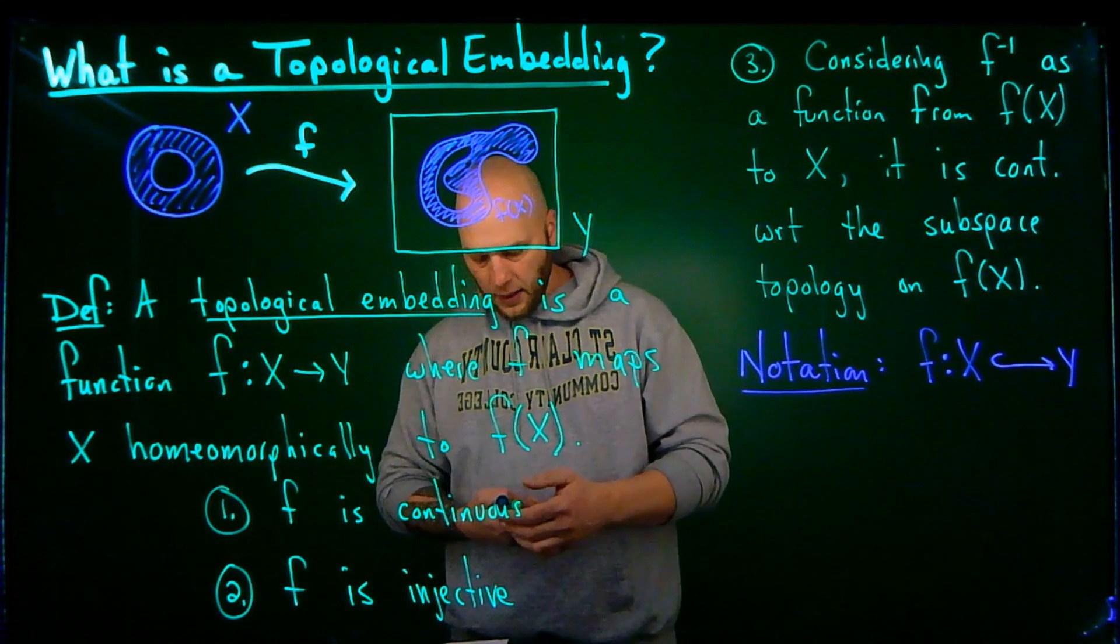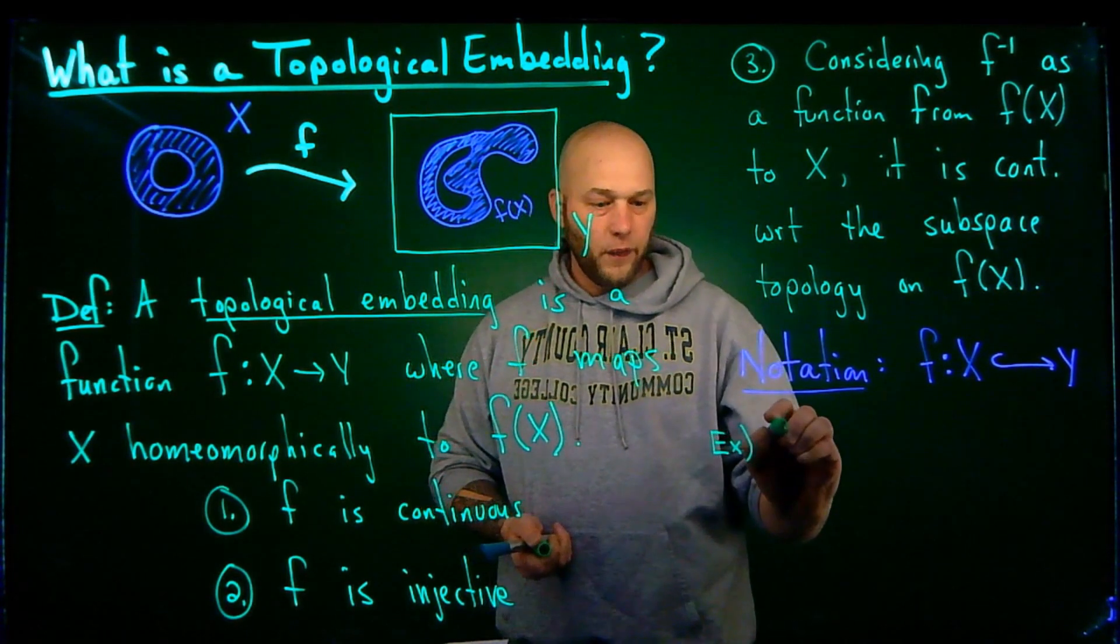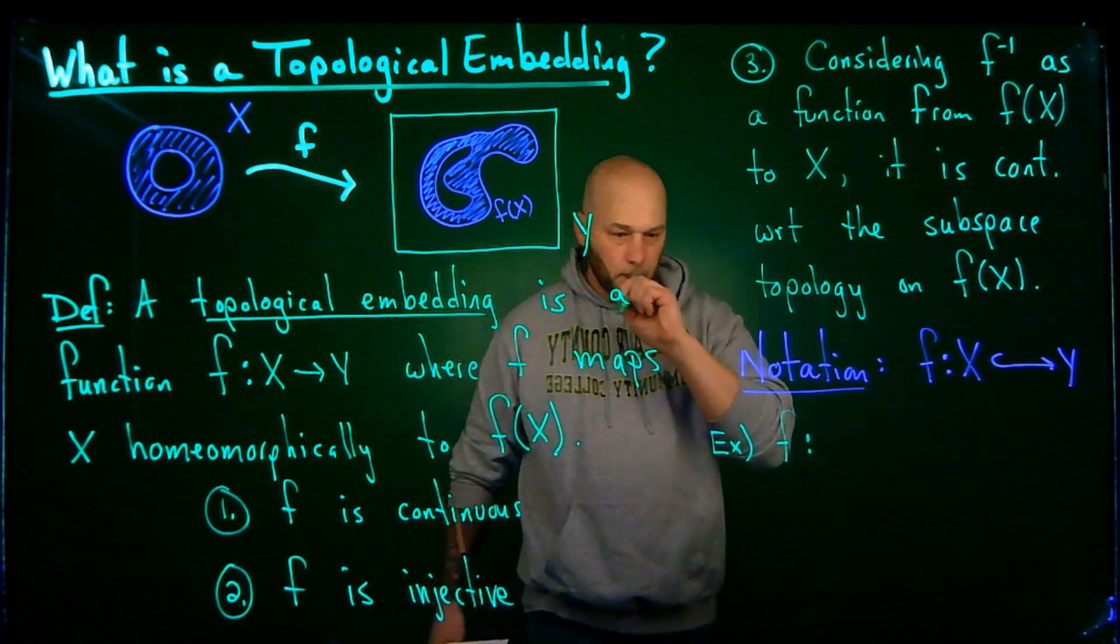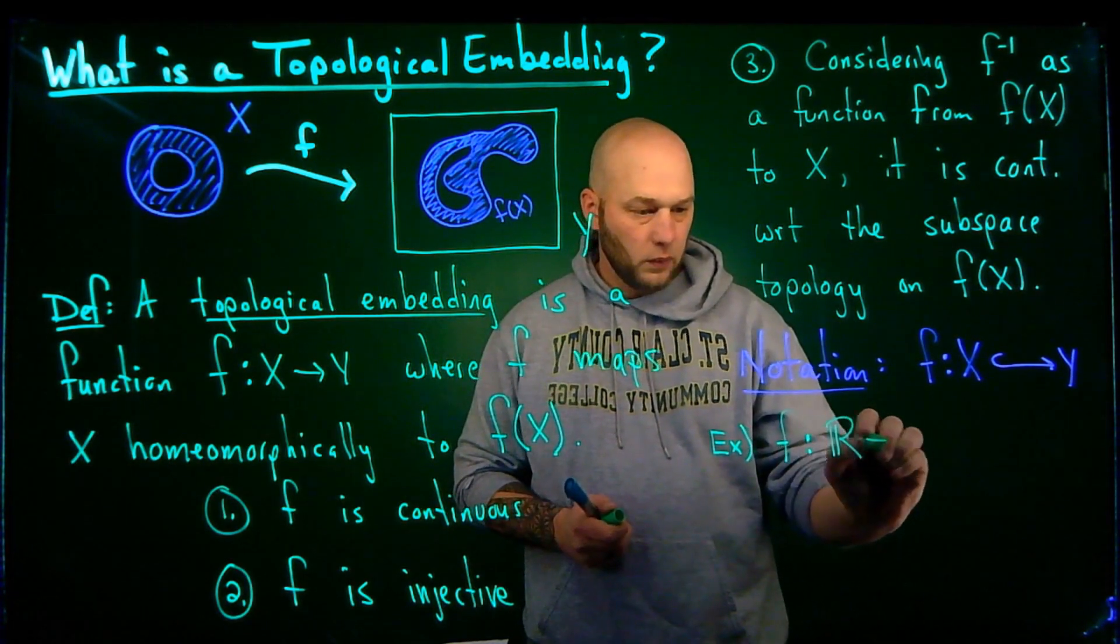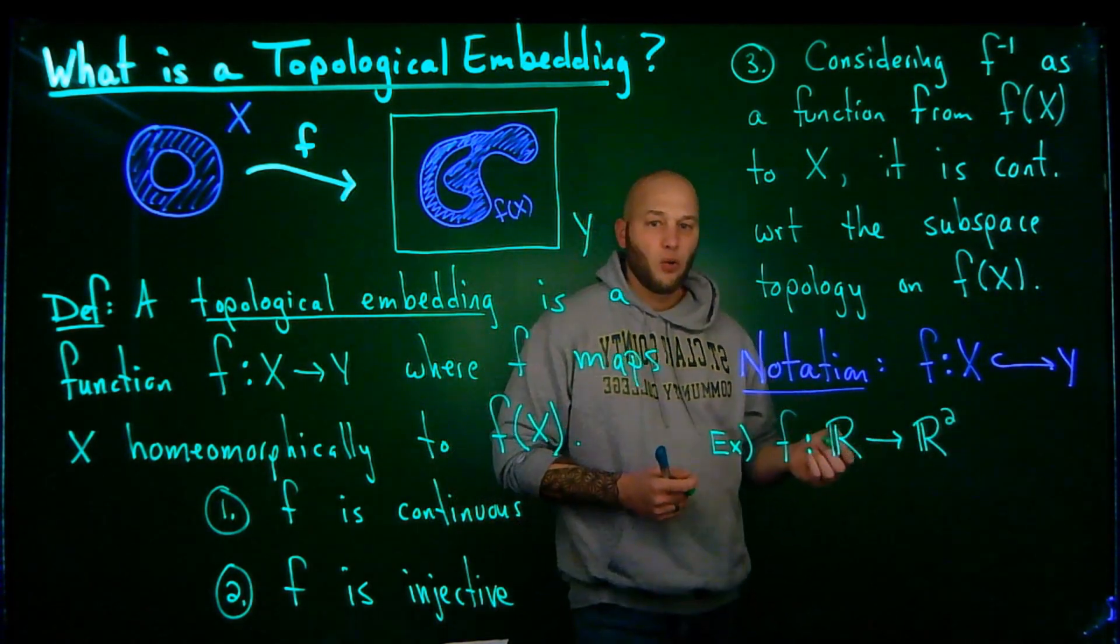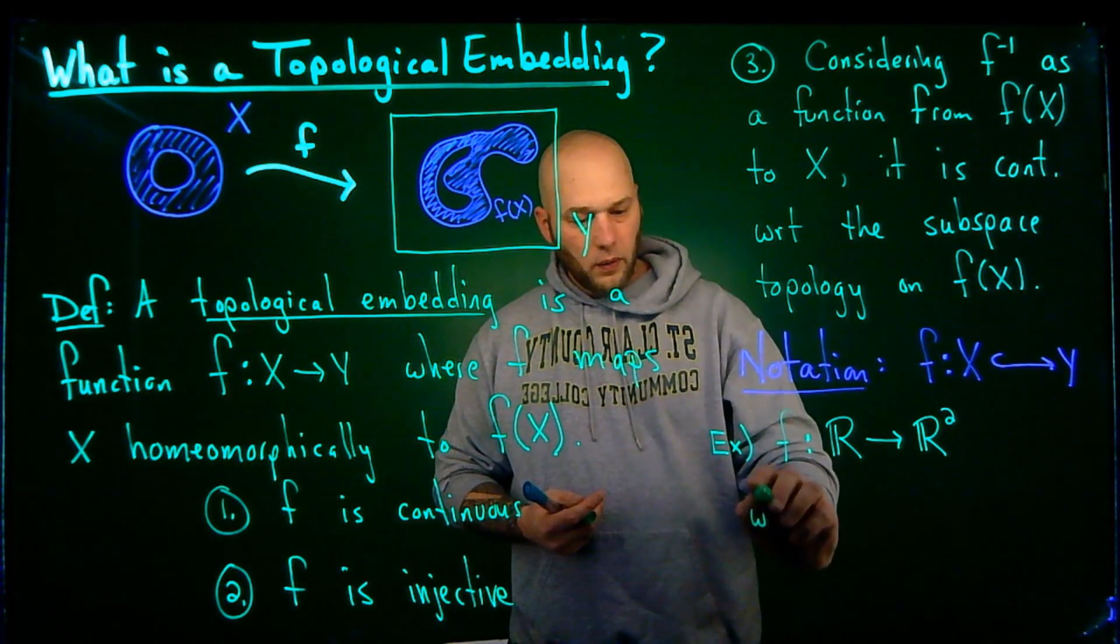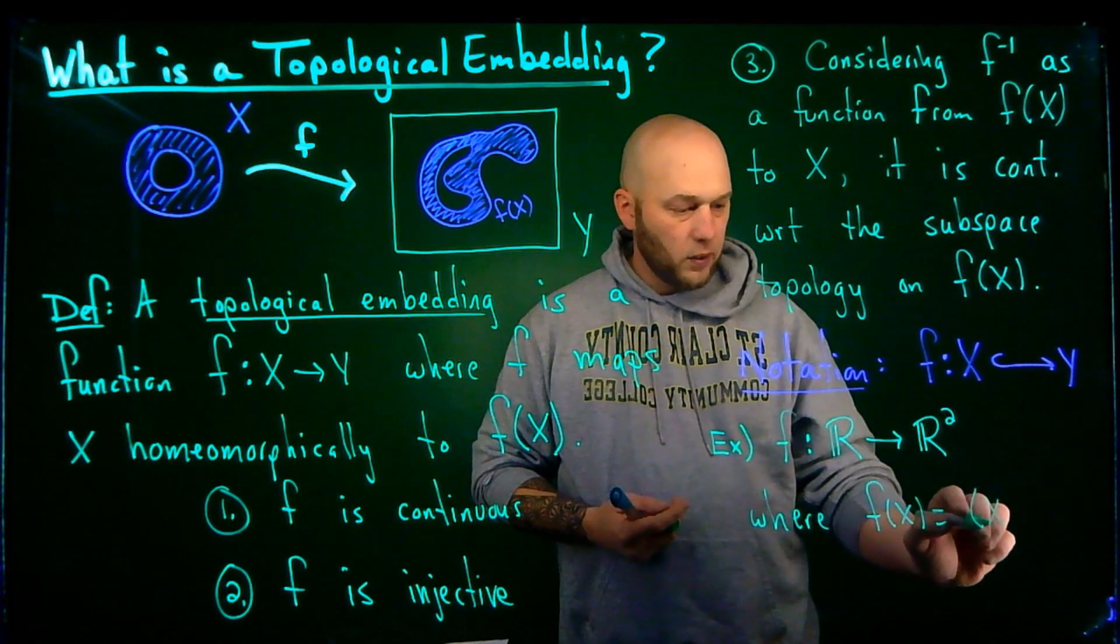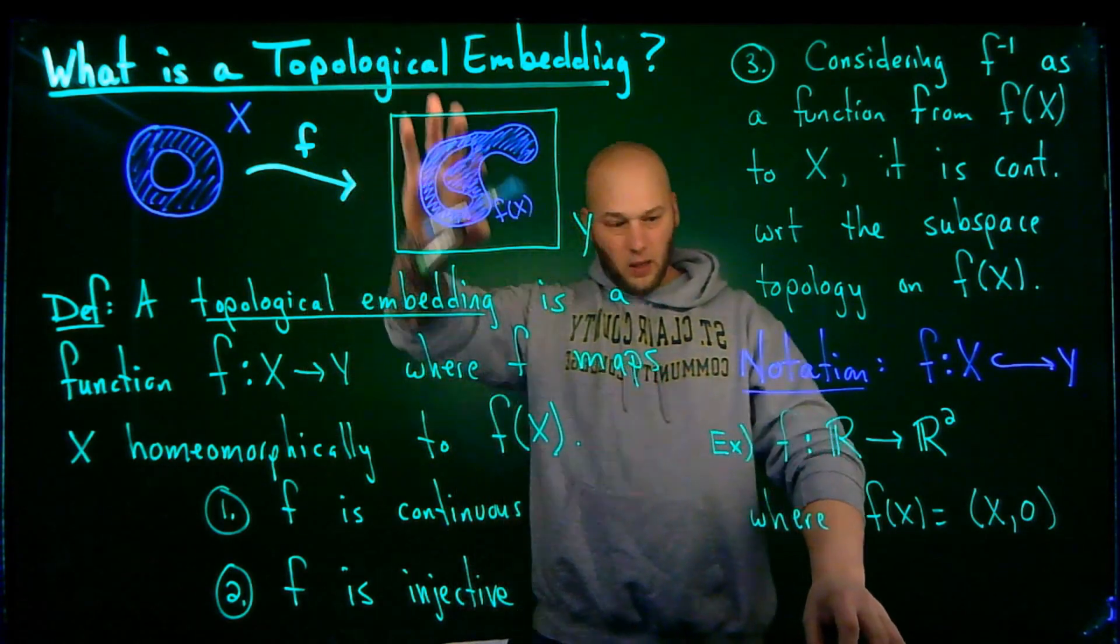But let's go ahead and take a look at a couple examples. For example, let's take the function F, which goes from R to R². So F is going to take a real number, and it's going to spit out a point in the plane where F of X is equal to X comma zero.